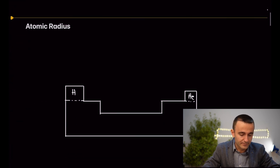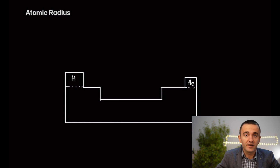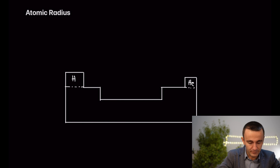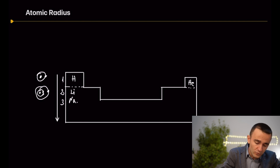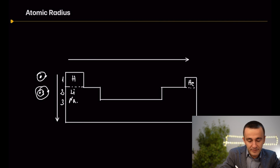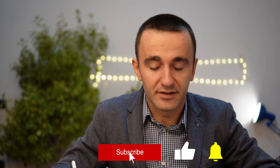Let's start with the first trend: atomic radius. Atomic radius increases as we move down a group — this is obvious because we are increasing the number of electron shells. As we move from left to right across a period, we see a decrease in atomic radius. This is due to the fact that protons are being added, and with more protons the attractive force from the positive nucleus is higher.